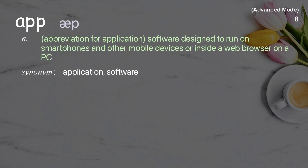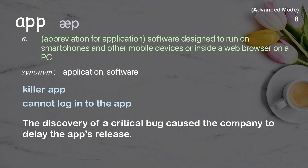App. Abbreviation for application; software designed to run on smartphones and other mobile devices, or inside a web browser on a PC. Examples: killer app; cannot log in to the app. The discovery of a critical bug caused the company to delay the app's release.